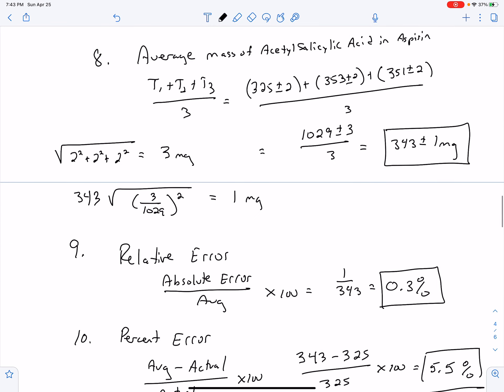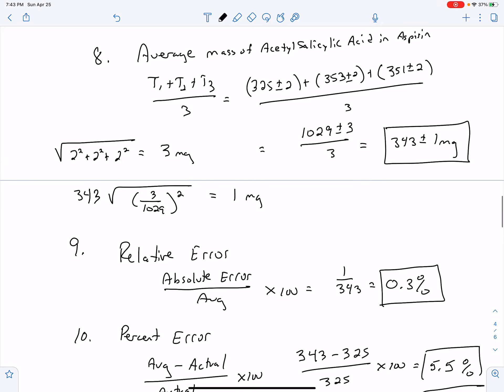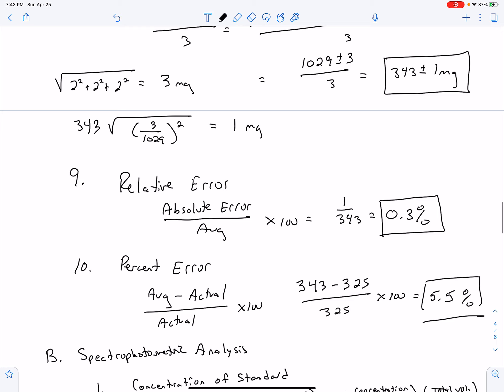From that, I found a relative error, taking the absolute error, the 1, over the average measurement, and that was 343 to give me 0.3%. And then the percent error was the average, 343, minus the actual. In their case it was 325. I'm not sure what yours is, but you'll see that there. A very common number. All over 325 times 100. Well, 343 minus 325, that's 18. So two sig figs for an answer, 5.5%.